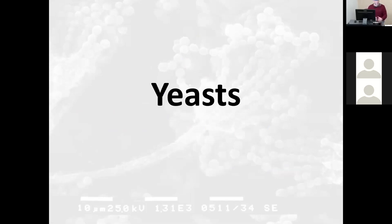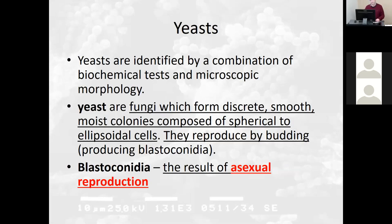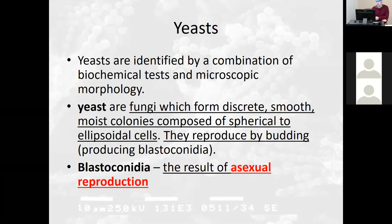Moving to the yeast — remember, yeast are the single-celled fungi. We can identify them by a combination of biochemical tests. We have API strips for mycology and could have ID'd our yeast, but we could also do microscopic morphology. So there were two ways we could have handled the yeast, and we're tempted to use the microscopic today. Yeast are fungi which form discrete, smooth, moist colonies composed of spherical to ellipsoidal cells. They reproduce by budding, producing a blastoconidia — the result of asexual reproduction.